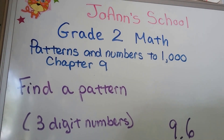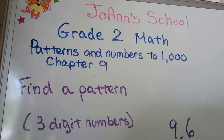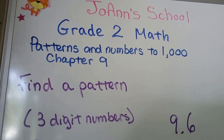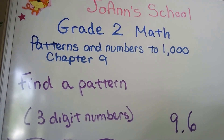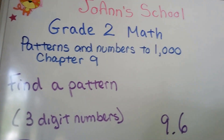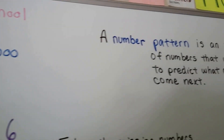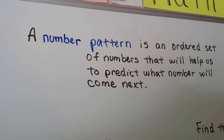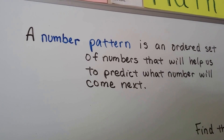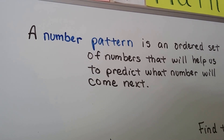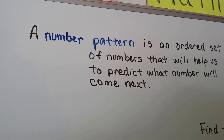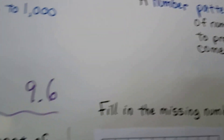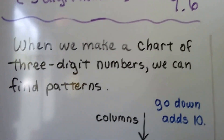We're going to talk about how to find a pattern. We're still working with three-digit numbers and we're going to find number patterns. This is lesson 9.6. A number pattern is an ordered set of numbers that will help us to predict what number will come next — that's what we're going to look for. It's going to help us figure out what number comes next.